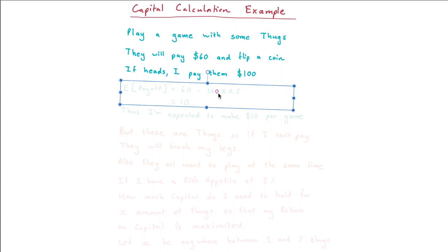Now, if we had to look at the expected payoff, we're getting $60 and then there's a 50% chance that we have to pay out $100. So we can see that I'm actually expected to make $10 per game.